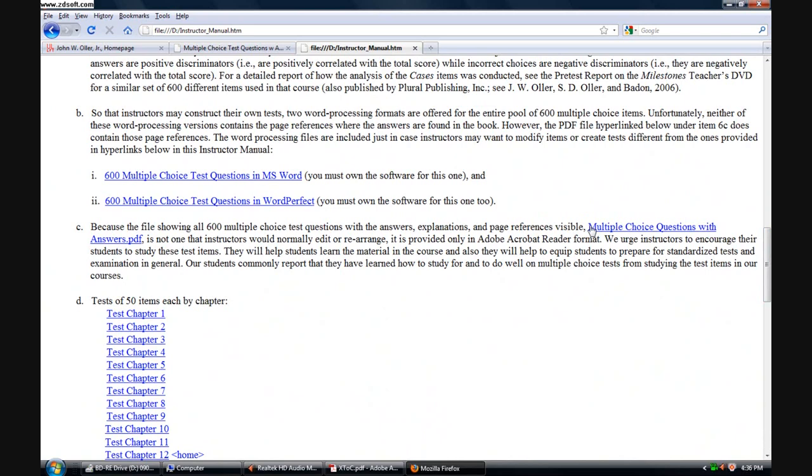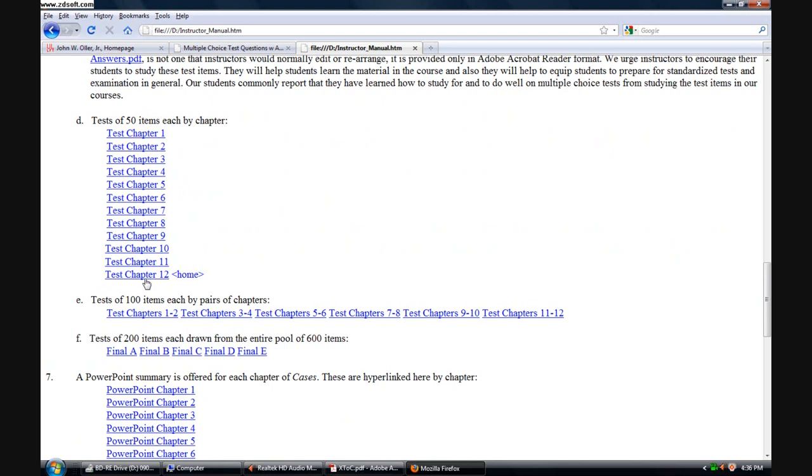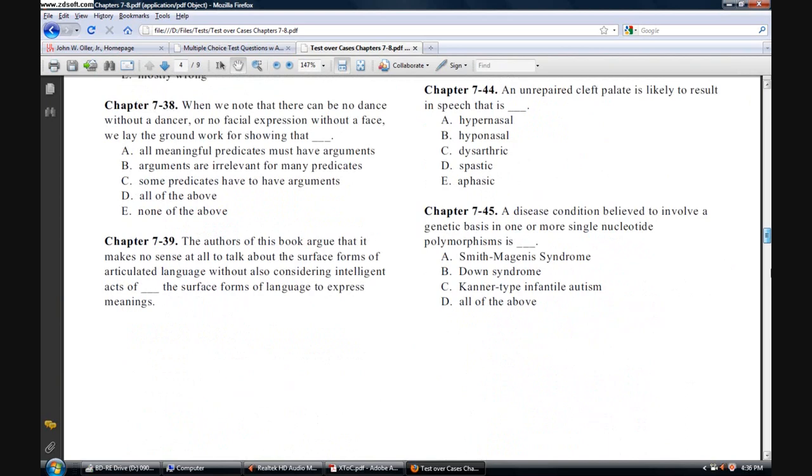We looked at the multiple choice test questions, and we also have these questions as tests. The instructor can use 50-item tests over any of the chapters, or for example, let's say we look at the test over chapters 7 and 8. If I click here, that test will open. And here it is, over chapters 7 and 8. There are 100 items here, and you can see that the answers are not showing in the test version.